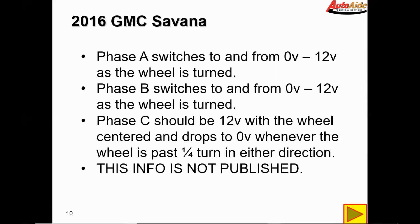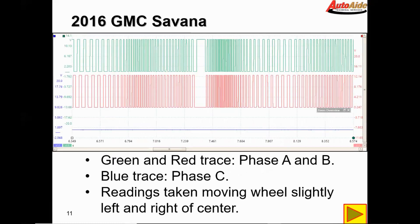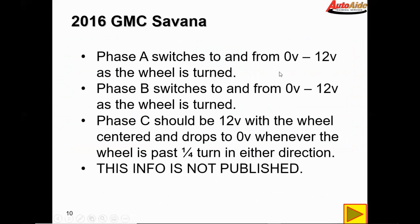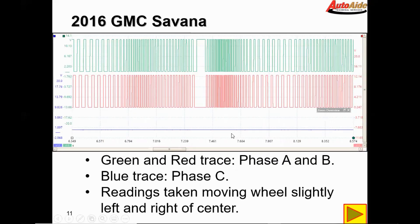With these voltage readings in mind, let's take a look at the scope. Our red and green trace is phase A and B, and our blue trace is phase C. The readings are taken while moving the wheel slightly left and right of center. Phase A and B appears to be okay, but our phase C is sitting at 0 volts. Phase A and B are switching between 0 and 12 volts when the wheel is turned, which is correct, and phase C should be 12 volts with the wheel centered. We're sitting at 0 volts throughout the entire test — that is not correct.